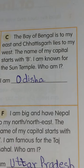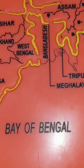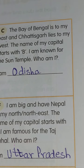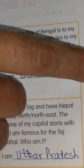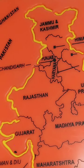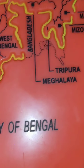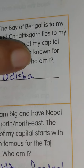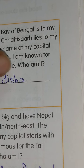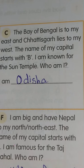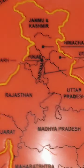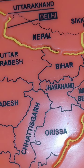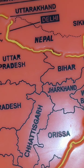The Bay of Bengal is to my east, and Chhattisgarh lies to my west. The name of my capital starts with B. I am known for the Sun Temple. Who am I? I am Odisha. He is showing the states and the capital, children. Don't get confused here. It is very, very clear. I am showing you the map also. Please listen very carefully and see the video two or three times so that you will understand.